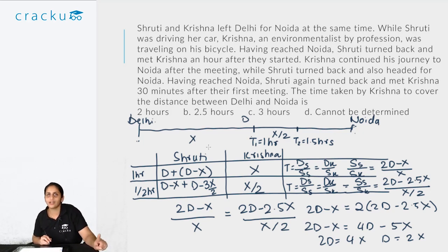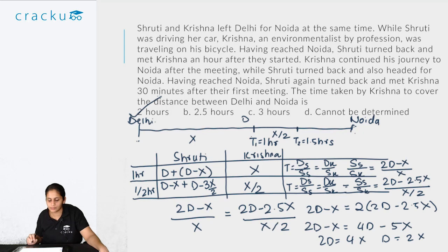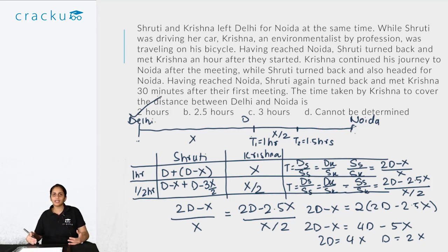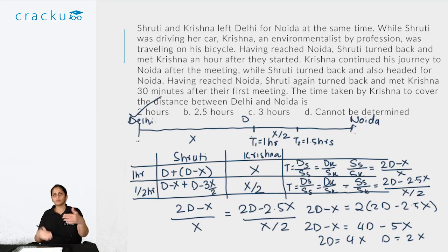Since D = 2x and Krishna covers x in one hour, to cover 2x he will take 2 hours. So the time taken by Krishna to cover the distance between Delhi and Noida is 2 hours — option A. In this problem we split the journey into two legs, identified that time was constant in each leg, wrote the speed ratio equations, equated them, and solved to get the answer.